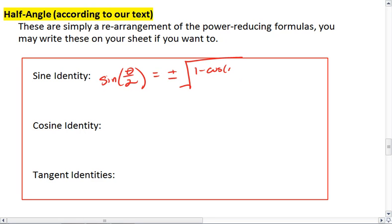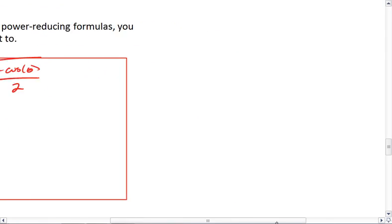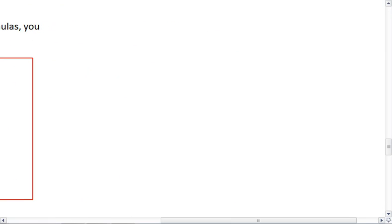This is simply a rearrangement of your half angle formula of sine squared theta equals one half, 1 minus cosine 2 theta.